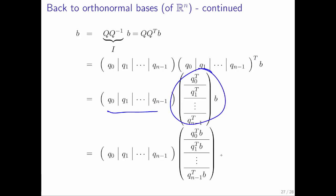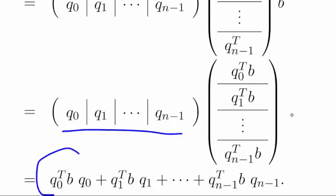If you do this partitioned matrix times vector multiply, we just get this right here. If we then multiply that out, taking the linear combinations of these columns, what you get is this right here. Notice that each of these terms is just the component of the vector b in the direction of the given basis vector.